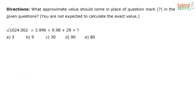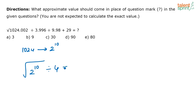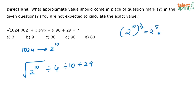The next problem: root of 1024.002 divided by 3.996, divided by 9.98, plus 29 equals question mark. What is 1024? It is 2 to the power of 10. So you need the root of 2 to the power 10, divided by 4 — taking 3.99 as 4 — divided by 10, plus 29. Root of 2 to the power 10 is 2 to the power 10 times 1 by 2, equal to 2 to the power 5. What is 2 to the power 5? That equals 32.